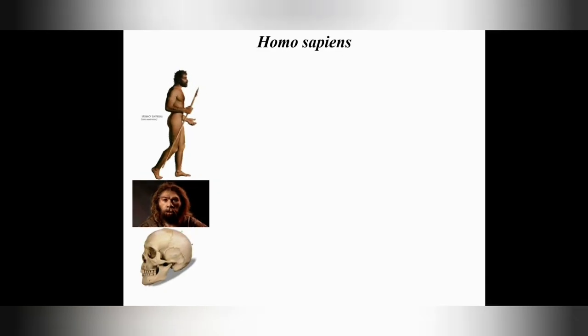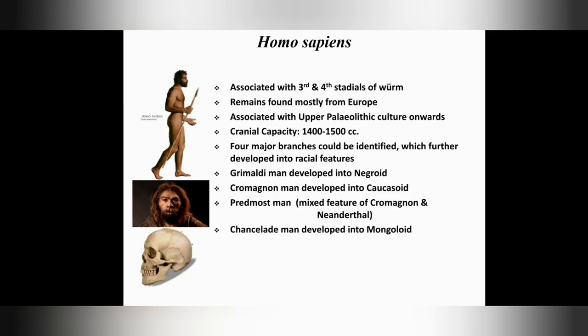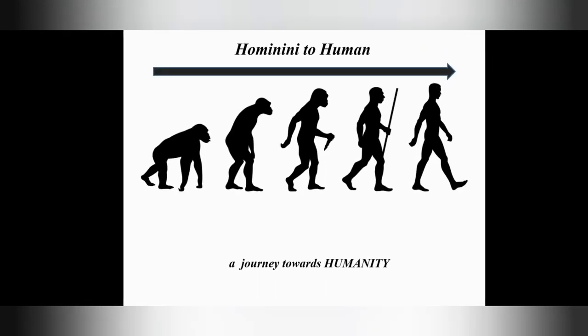The next is Homo sapiens. Its remains were also found mostly from Europe and were associated with Upper Paleolithic culture onwards. It also had a developed cranial capacity. From Homo sapiens, we can see four distinct branches which evolved into the racial features we see in the present day: the Grimaldi man developed into Negroid, Cro-Magnon man developed into Caucasoid, the Prydmos man had mixed features of Cro-Magnon and Neanderthal, and the Chancelade man developed into Mongoloid. This was the story of how Hominini evolved to human.